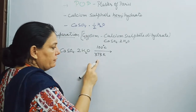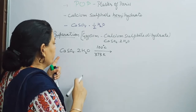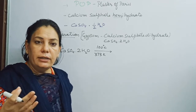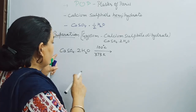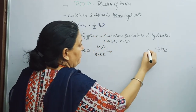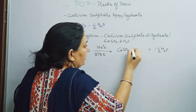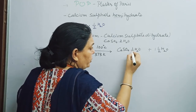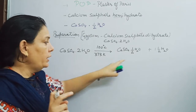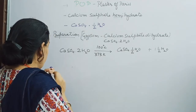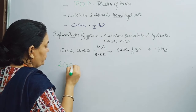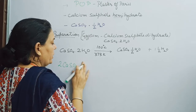CaSO4·2H2O is heated at 100 degrees Celsius or 373 Kelvin. When hydrated salts are heated, water molecules evaporate. One and a half water molecules evaporate, and what is left behind is Calcium Sulfate half H2O — that is Plaster of Paris. The balanced form uses 2 CaSO4·2H2O to give 2 CaSO4·½H2O plus 3H2O.